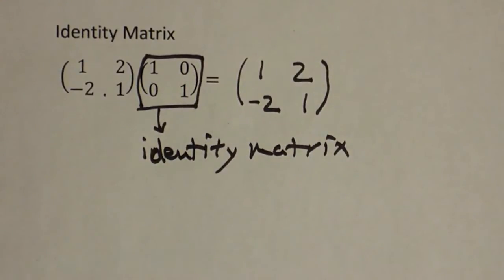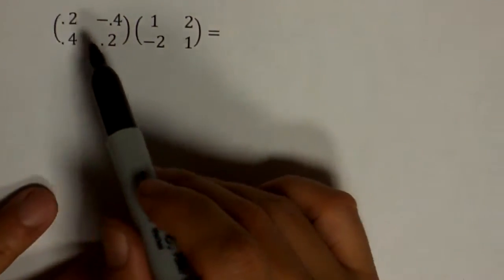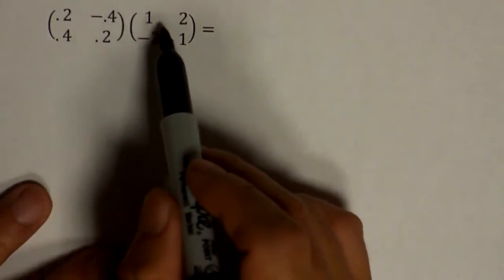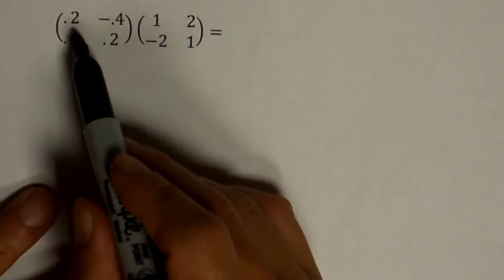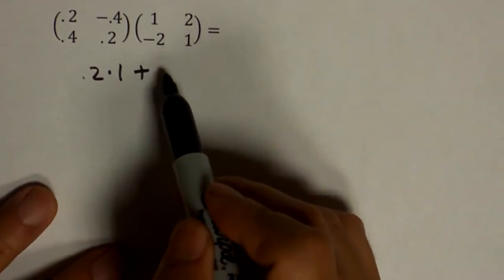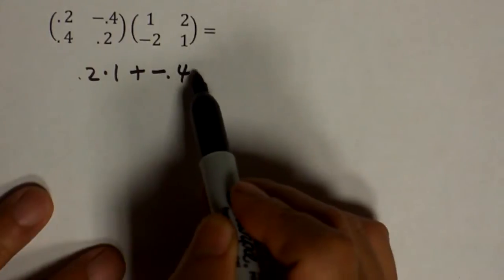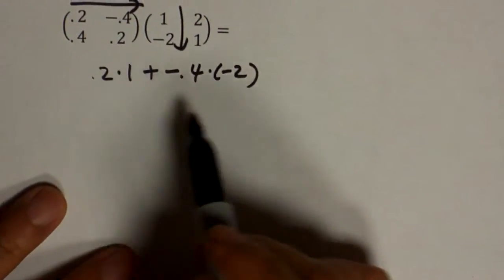Let me do another matrix multiplication this time between a decimal matrix and a regular integer matrix. Point two times one plus negative point four times negative two. That's across, down.